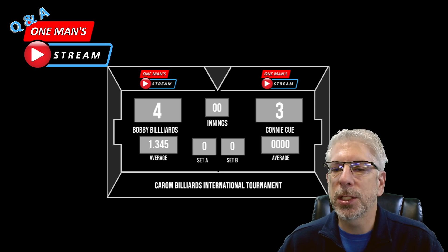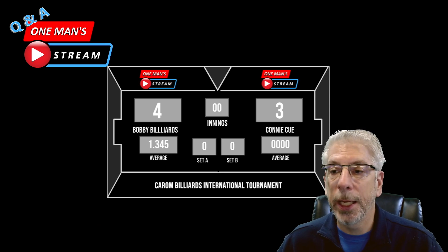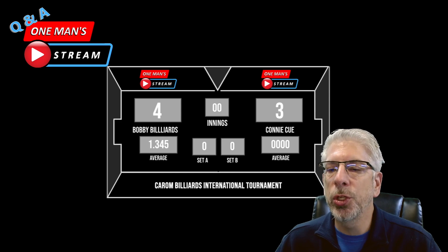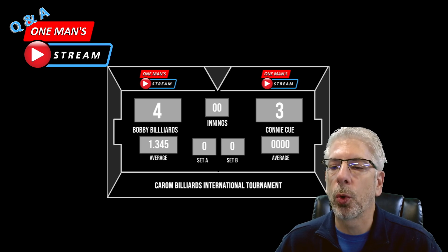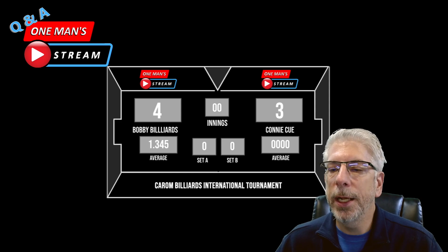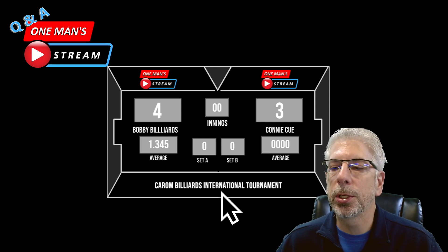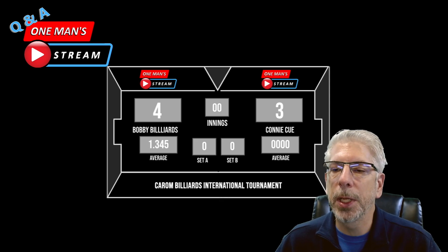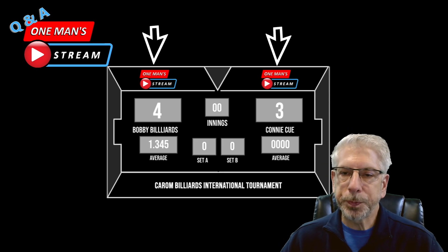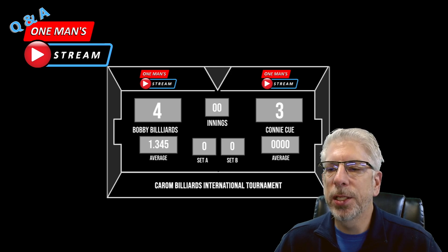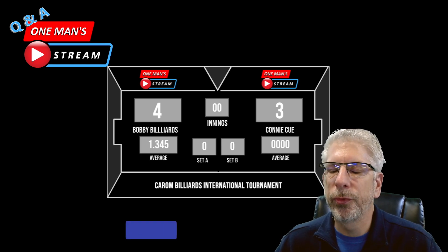The average is something you'll need to transfer from a calculating format, either a spreadsheet or manual calculations, and enter manually. The sets I'm going to set up as text widgets as well since I'm not sure what the scoring is. The innings I'll set up as a score widget. The title text that says 'Carom Billiards International Tournament' will also be a text widget, and there's a space up here for two sponsor logos.